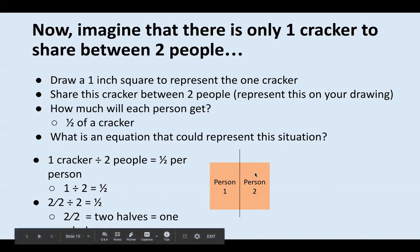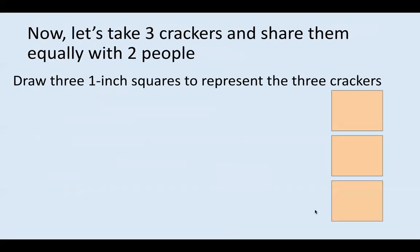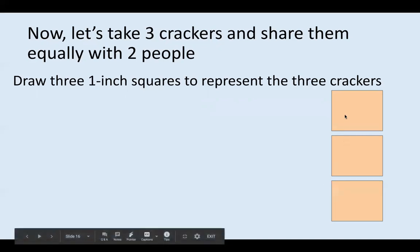Two over two equals two halves, which equals one whole. So our two halves put together equals one whole cracker. Last problem: we're going to take three crackers and share them equally between two people. This time they get to split three crackers between them equally. So draw three squares to represent the three crackers — if you need to start a new page, that's okay.